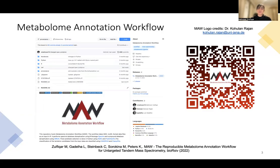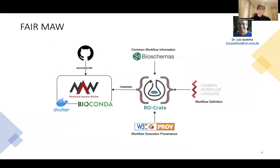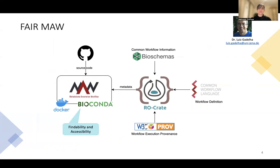We use the Metabolome Annotation Workflow, or MAW, as a use case to ensure reproducibility in metabolomics workflows. To make sure that MAW follows all the FAIR principles, we ensure findability and accessibility by making the source code for MAW available on GitHub, while it is available as two Docker containers for R and Python, as the workflow is written in two languages. It is also going to be soon available as a biocontainer.